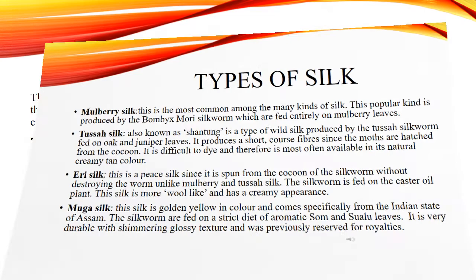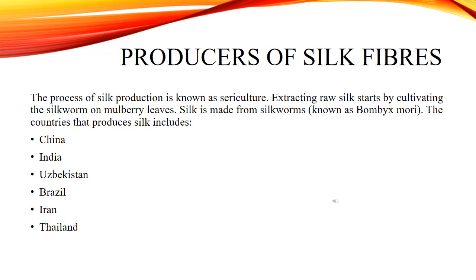Producers of Silk Fibers. The process of silk production is known as sericulture. Extracting raw silk starts by cultivating the silkworm on mulberry leaves. Silk is made from silkworms known as Bombyx mori. The countries that produce silk include China, India, Uzbekistan, Brazil, Iran, and Thailand.